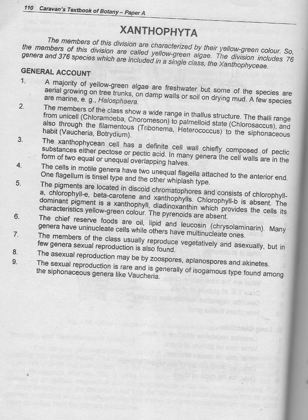Number six: the chief reserve foods are oil, lipid, and glucosin (chrysolaminarin). Many genera have uninucleate cells, while others have multinucleate cells, or both types may be present.